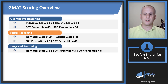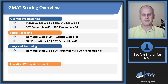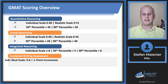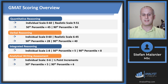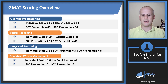Integrated reasoning has an individual scale of 1 to 8 — 50th percentile is a 5, 90th percentile is an 8. The analytical writing assessment has an individual scale of 0 to 6 in half-point increments, so you could receive a 5.5 or 4.5 depending on the averaging of your two scores. The 50th percentile is a 5 and the 90th percentile is a 6. A 5 on the AWA will be almost unequivocally sufficient for any business school application — don't stress about getting a 6 or even a 5.5; we'll cover in a future lesson how to reliably achieve a 5.